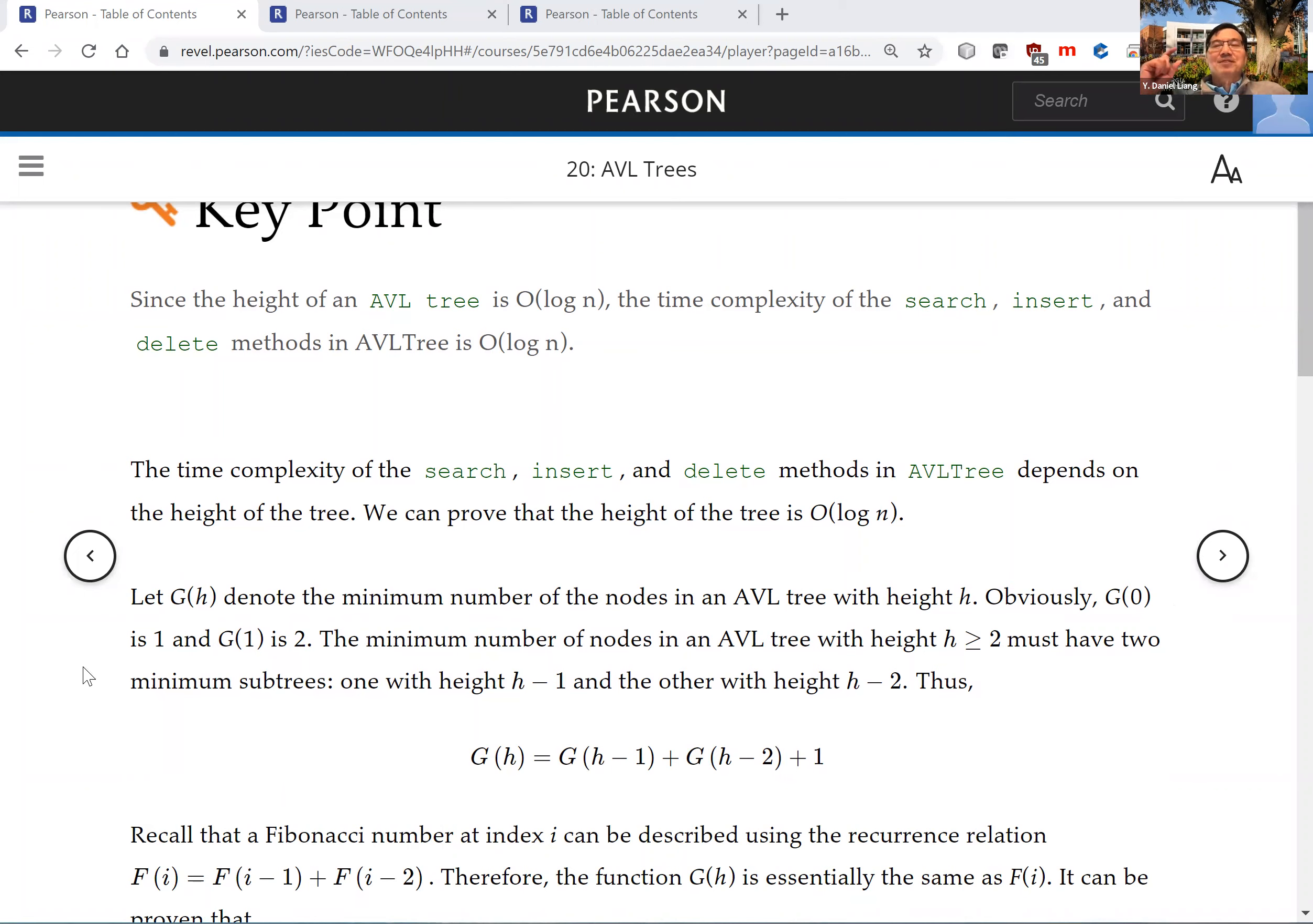The minimal number of nodes in an AVL tree with height h greater than or equal to two must have two minimal subtrees: one with height h minus one, and the other with height h minus two.